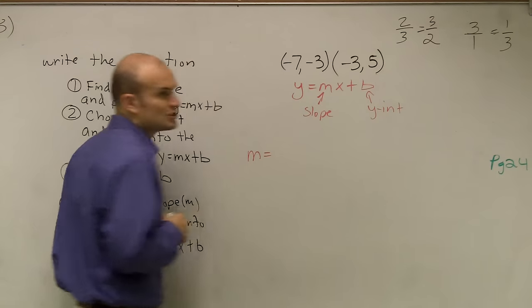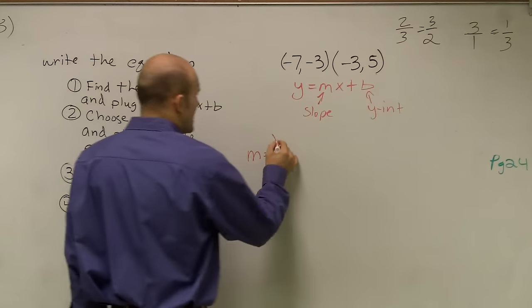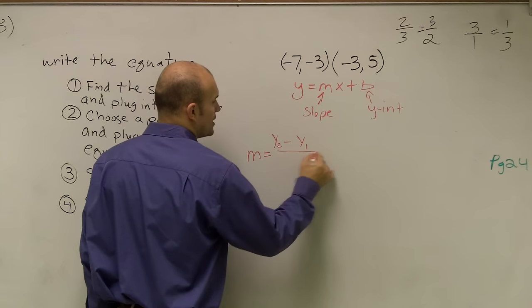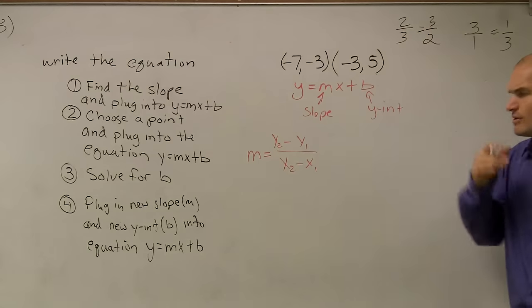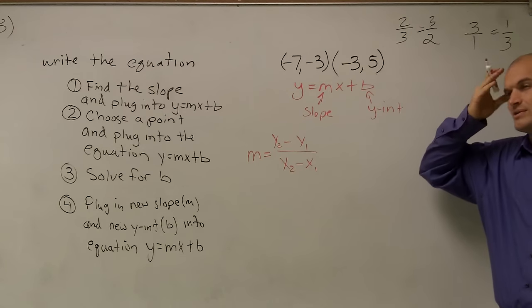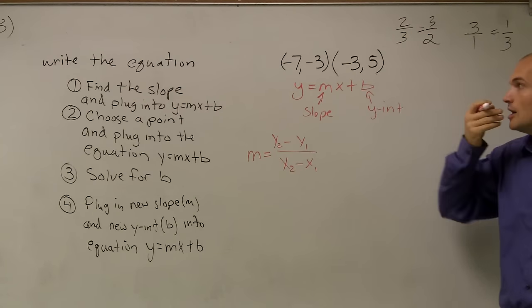So the slope formula, which should be in your notes, is m equals y2 minus y1 all over x2 minus x1, okay? And then you might say, well, crap, all right, I remember that, but what was the x2 and the x1?